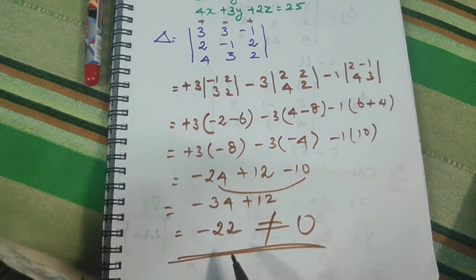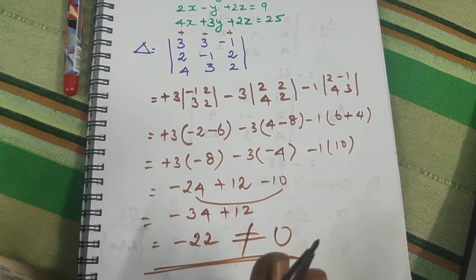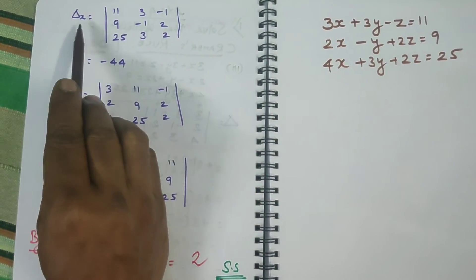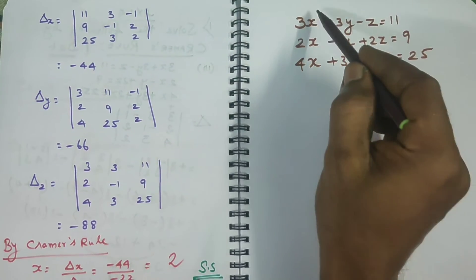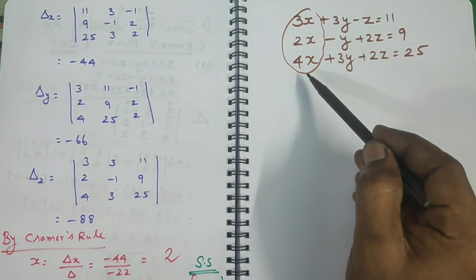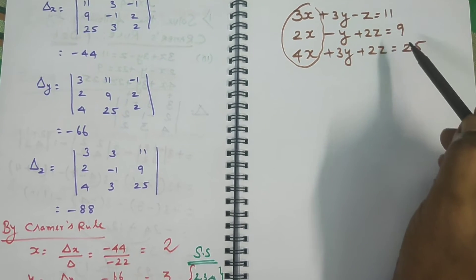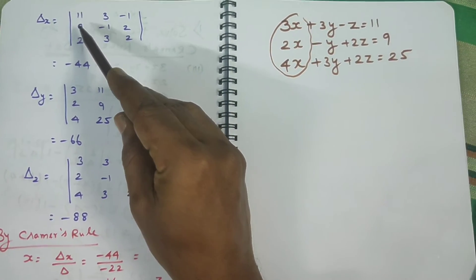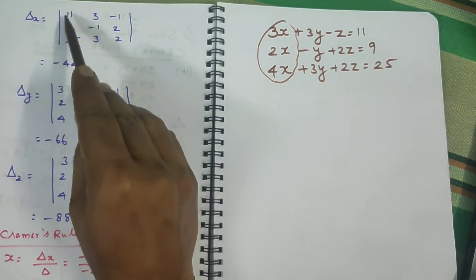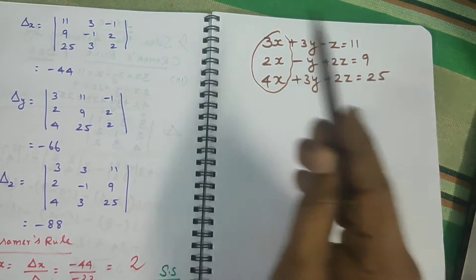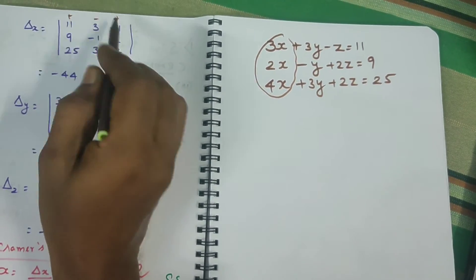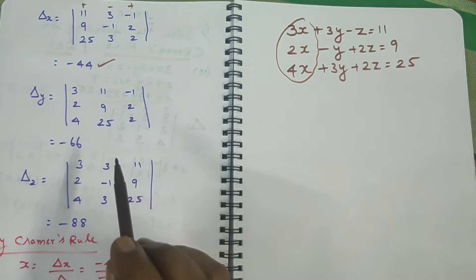Next we find delta x. For delta x, we replace the x-coefficients column with the constant values — which are 11, 9, 25. The y-coefficients and z-coefficients remain the same. Delta x means: do not enter the coefficients of x; enter only the constant values. Using the plus, minus, plus expansion, we get the answer minus 44.